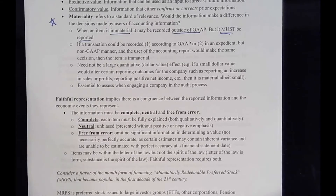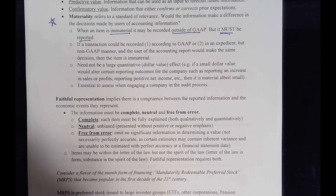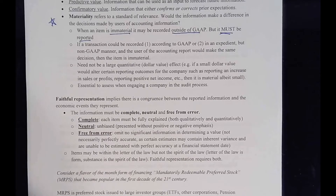Materiality doesn't need to involve a large dollar value. It could be a small dollar value if that small dollar value would alter some key outcome for the company. For example, $100,000 of net income seems tiny when net income is in the billions — but if that $100,000 would allow the company to report positive rather than negative income, or to meet an earnings per share forecast issued by equity analysts, then it becomes material. It's essential to assess materiality on an audit, and in fact many auditors set a threshold of materiality before pushing back against management on how something has been recorded.